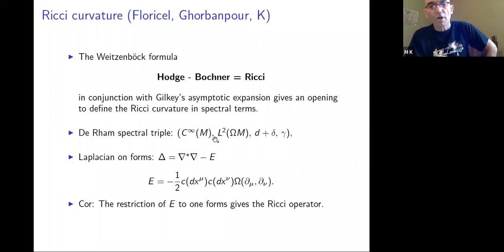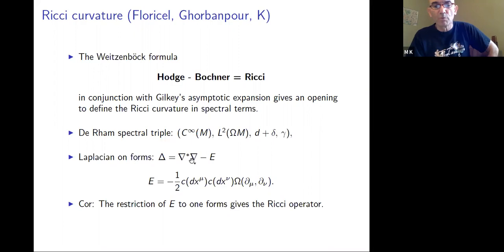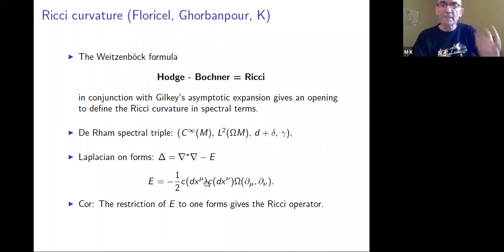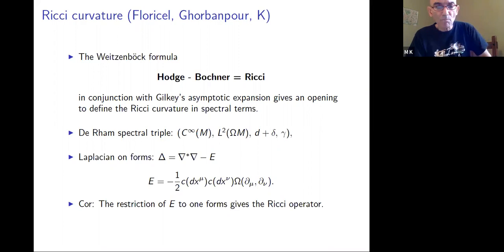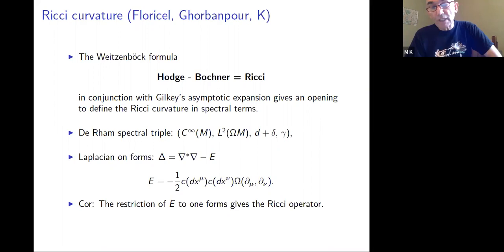The spectral triple in this case is the de Rham spectral triple — not Dirac, it's de Rham. The Laplacian on one-forms is the Hodge−Bochner operator — this is the Weitzenböck formula. We have an explicit formula for E, computed in terms of Ricci curvature. This is the Ricci curvature as an endomorphism, basically a section of the endomorphism of the tangent bundle. There is a way, and it has been computed in several papers, for the three-dimensional and two-dimensional case. But there's still a lot to be done there.